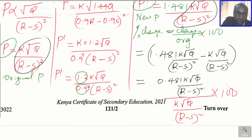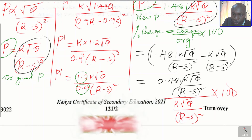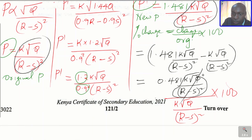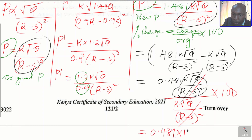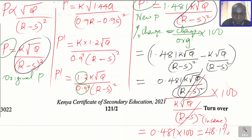The common factor K times the square root of Q divided by R minus S squared cancels out, and you're left with 0.481 multiplied by 100, which gives 48.1. That is correct to one decimal place, and that is an increase. So this is an increase of 48.1%. That is simply how we're supposed to solve that question.